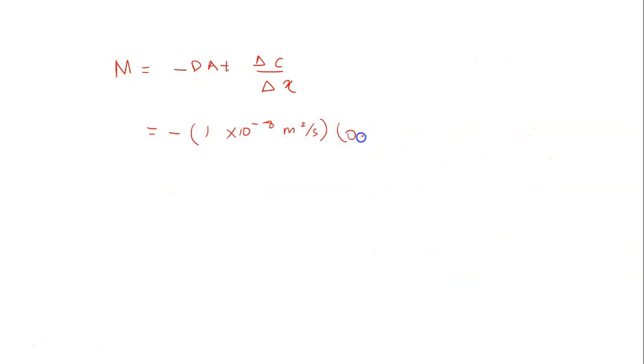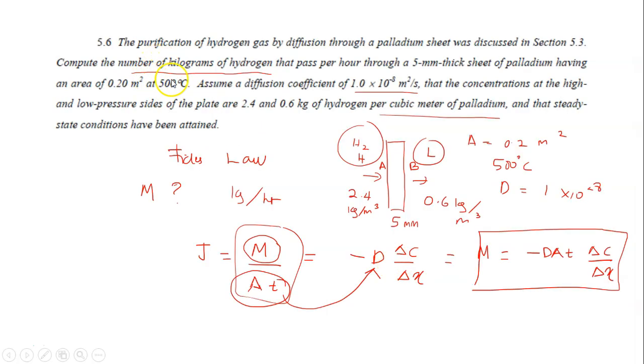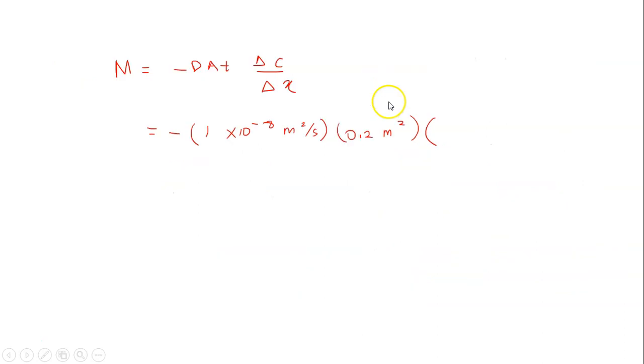Just plug in all the values. Negative D is 1 × 10⁻⁸ m²/s times A here is 0.2 m² times t. It says here kilograms of hydrogen per hour, per hour. The unit here is in seconds. You need to convert seconds to hours in which 3600 seconds per hour. So it has to be per hour to cancel out all the seconds.